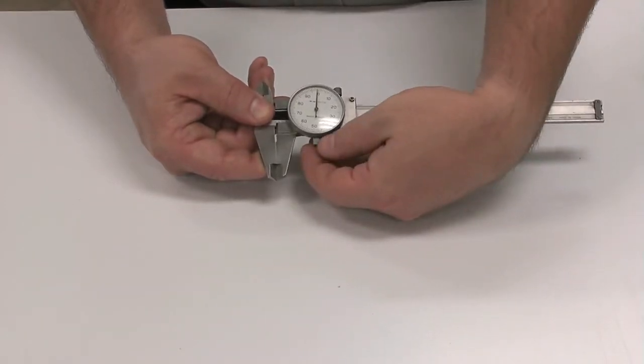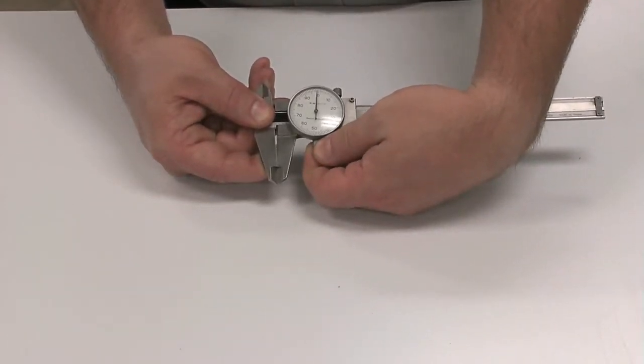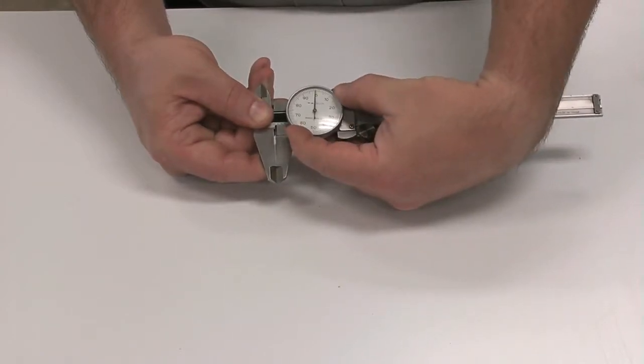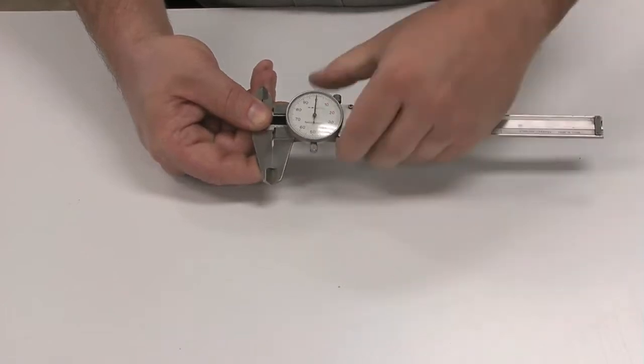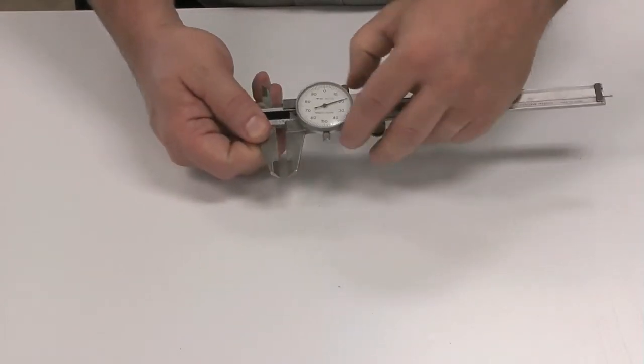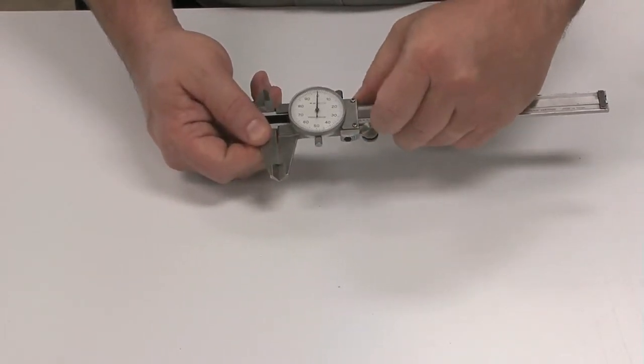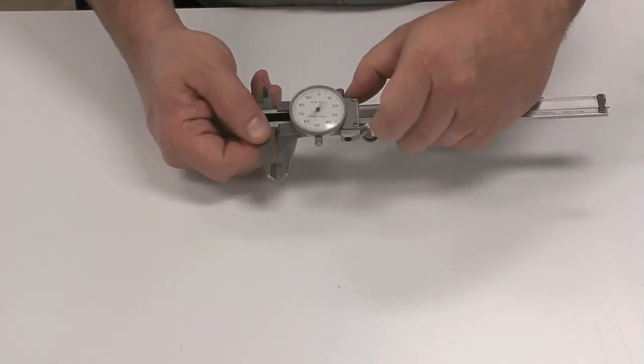These have an adjustment. We loosen this bottom screw, pull the zero in line with the dial indicator, then retighten the screw. Now each time we close this, it should return to that zero point.